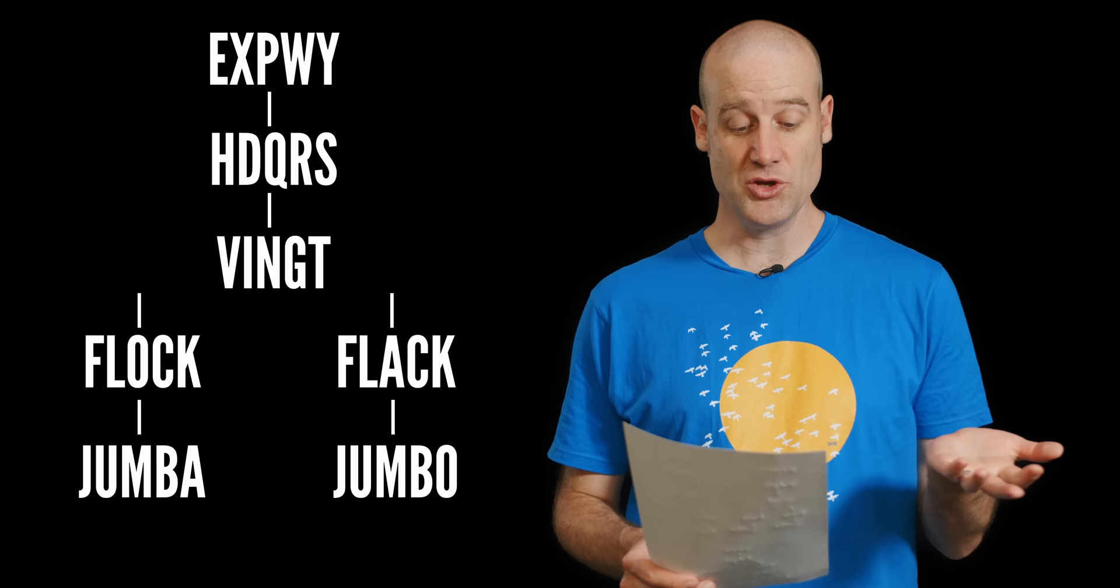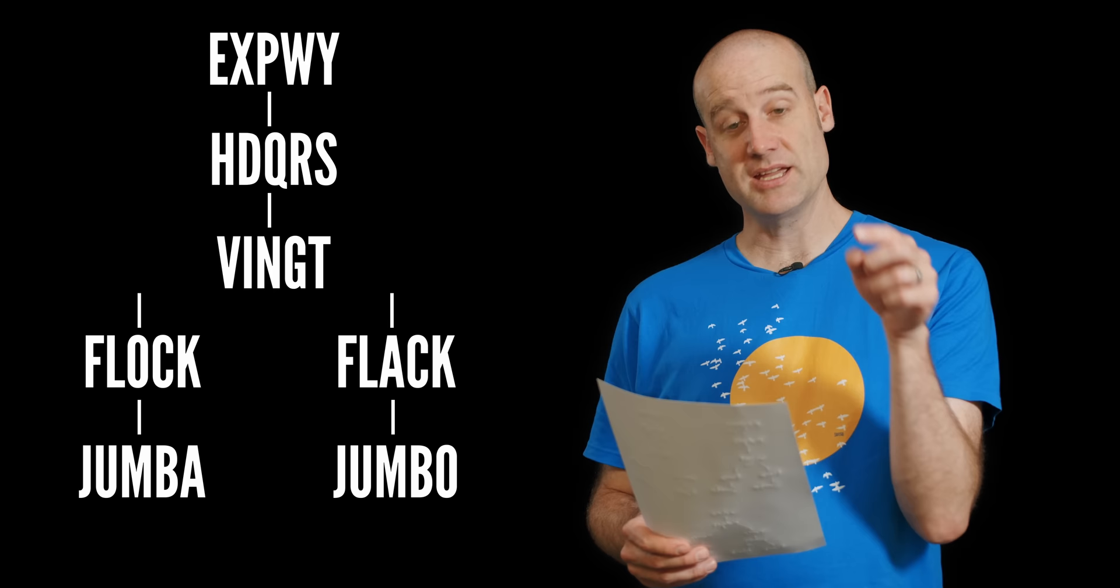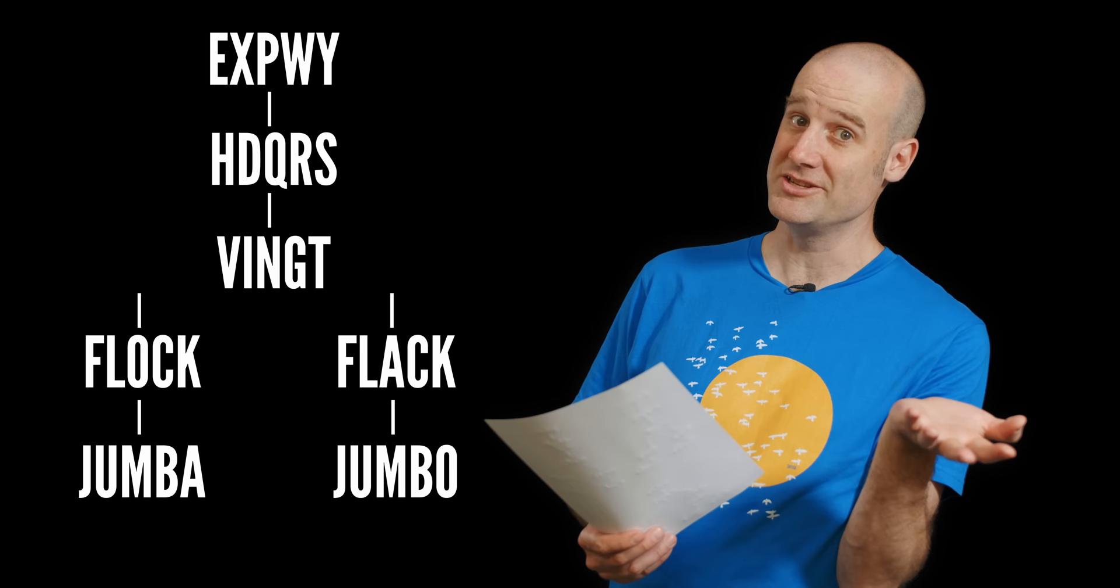Vingutut. And then either Flack and Jumbo or Flock and Jumba. I would almost consider those the same solution. Just with a slight tweak. And I realize people are going to hate this. No one's going to like expressway, spelt E-X-P-W-Y. I need a way I can find which of my solutions are unambiguously valid solutions so no one can argue with me.